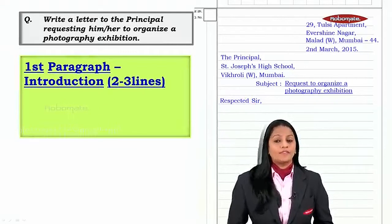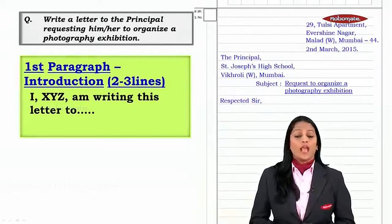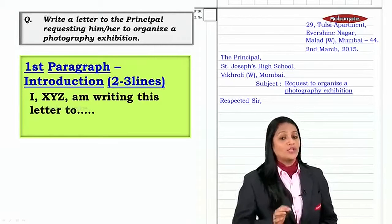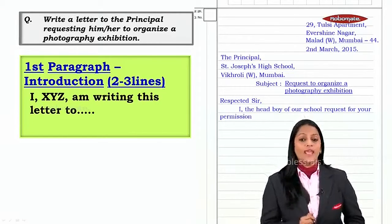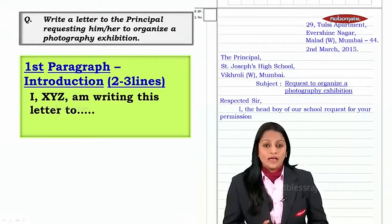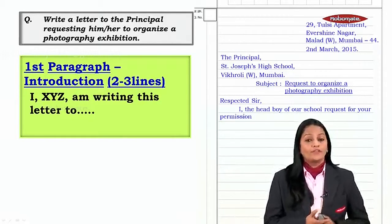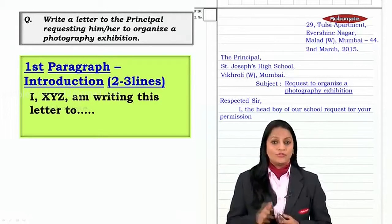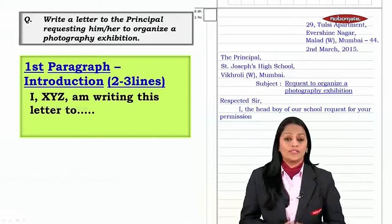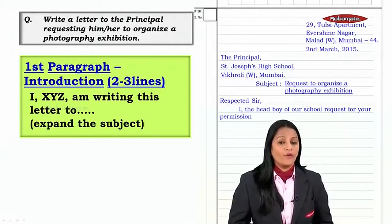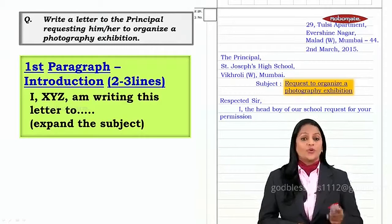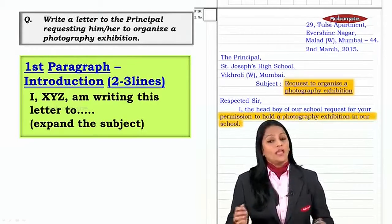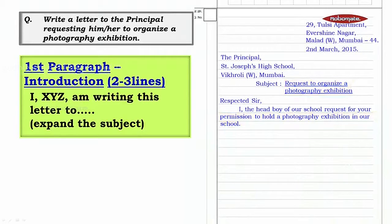Let us look at the main body of the letter. The first paragraph is an introduction — two to three lines — and you will say 'I, X Y Z, am writing this letter to...' and add the subject. Since it's a request, you can say 'I am writing this letter to request' or directly 'I, the head boy of the school, request for your permission to hold a photography exhibition in our school.' That is the purpose you mention in the first paragraph.